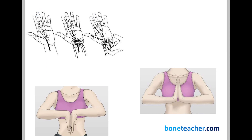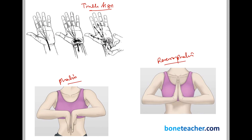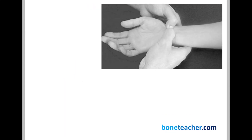Clinical tests to elicit carpal tunnel syndrome include Tinel's sign, where you tap or percuss on the median nerve over the carpal tunnel and the patient experiences tingling, numbness, or paresthesias in the median nerve distribution. You can also perform Phalen's test and reverse Phalen's test — flexing or extending the wrist respectively and holding for 60 seconds — which compresses the median nerve and reproduces symptoms. Durkan's test involves compressing the median nerve with your thumb to elicit symptoms.